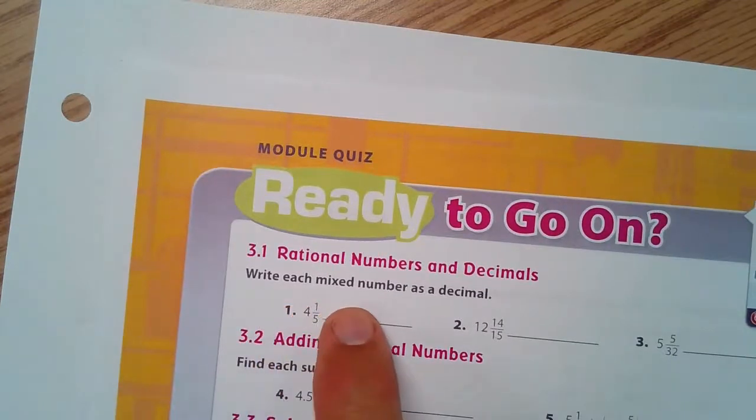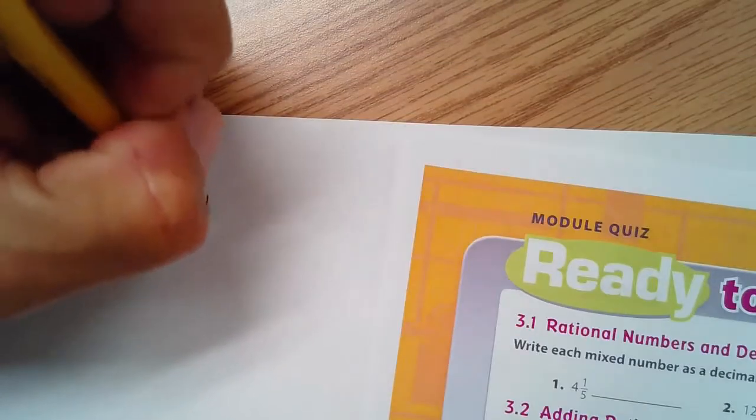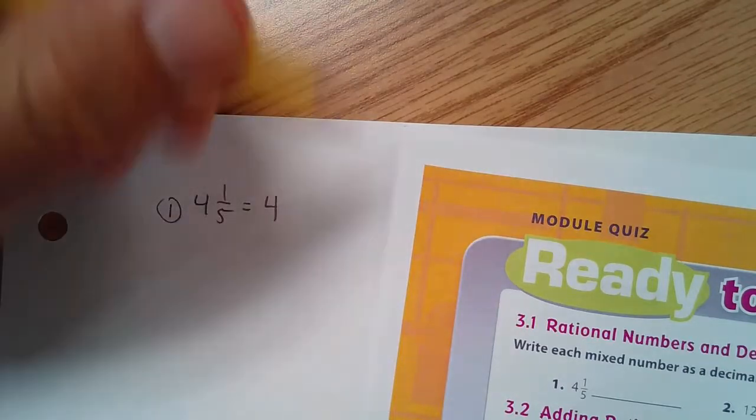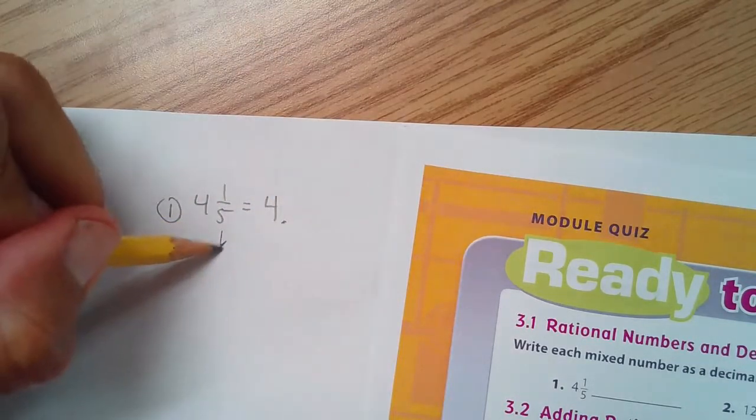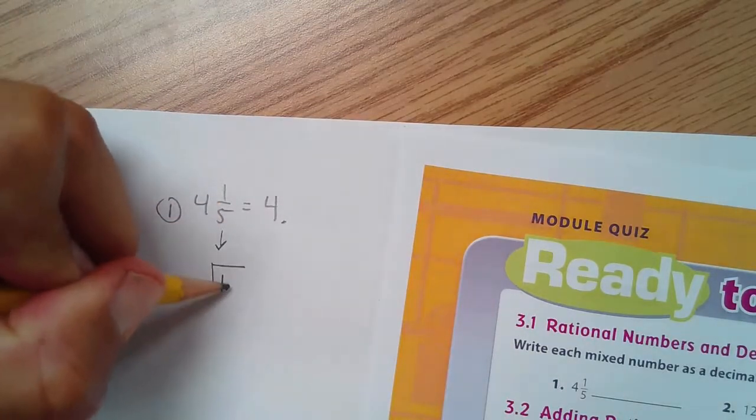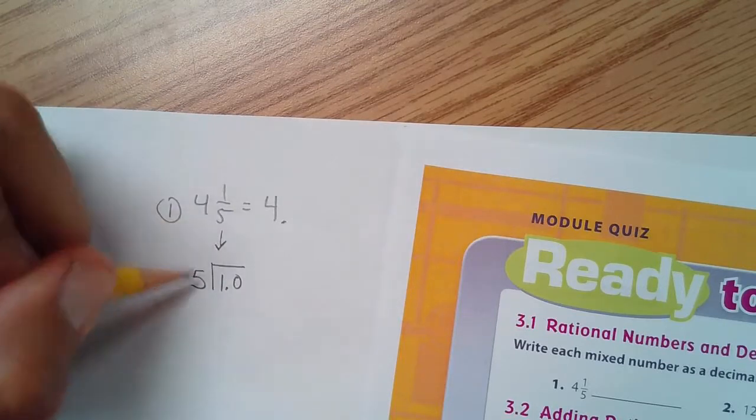Write each mixed number as a decimal. Well, let's see. I have 4 and 1/5. The 4 is my whole number, and then it's waiting for a decimal after that. For this, cowboys and horses - cowboy rides on top of the horse, the cowboy sleeps inside. Notice I put a 1.0.